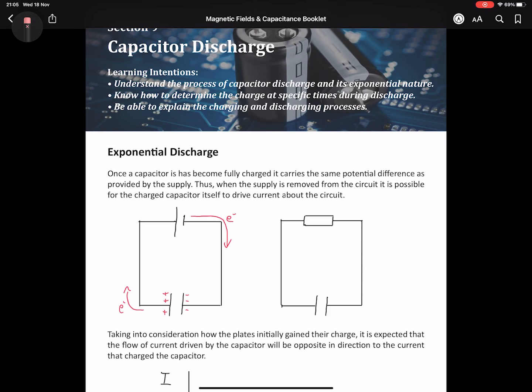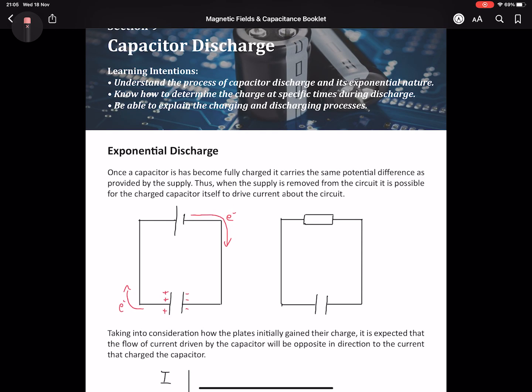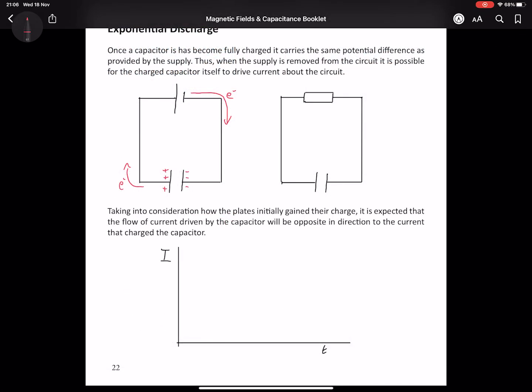This means the current would have been higher at the start and at the end, diminishing to nothing. This is very much true when we were charging as well, as initially there was no opposition to the flow, whereas later that opposition increased as the negative charge built. We can represent this graphically with a current against time graph to show this exponential decay, very much like you'd find for a half-life graph.